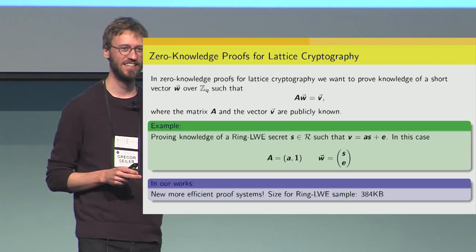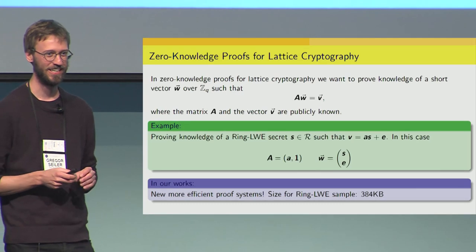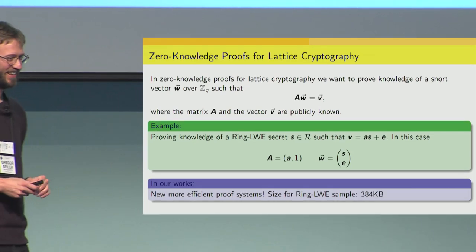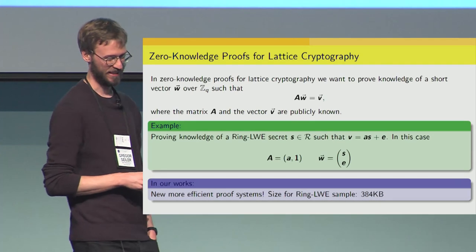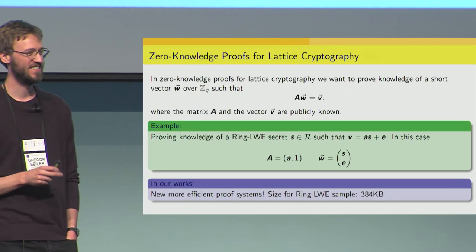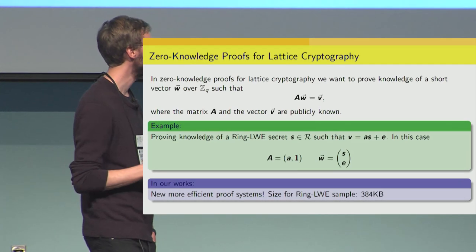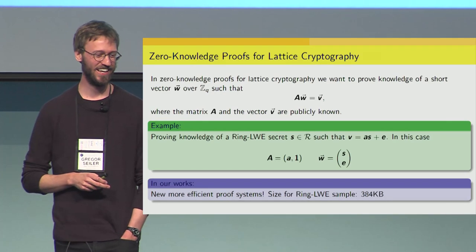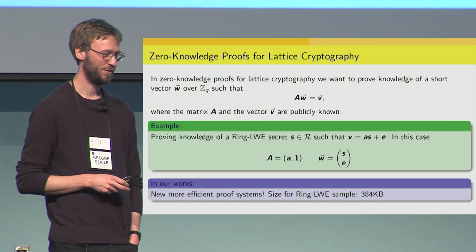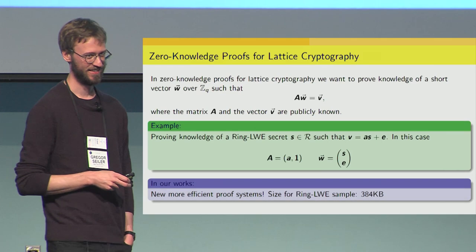We are interested in concretely efficient protocols where the proof size is measured in kilobytes, so it makes sense to focus on ring-based problems. If the goal is to prove such an equation exactly — meaning the solution you can extract from a prover is as short as the solution the honest prover knows — then until basically this year the only proof systems for this were the so-called Stern-type proofs, which are unfortunately very inefficient. For example, for the ring-LWE case, a Stern-type proof has a proof size of a couple of megabytes.